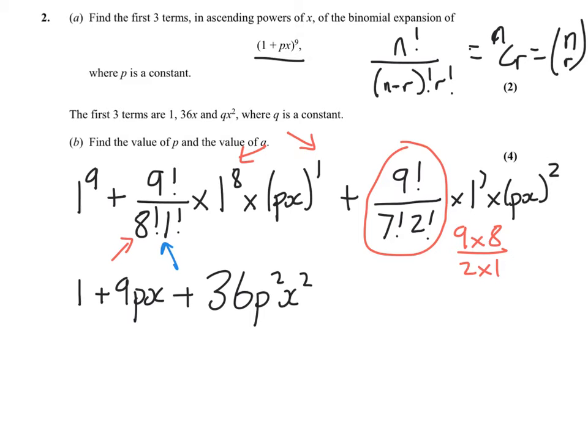And then the 1 to the power 7 is 1, p squared x squared. So there we go, that's part a done. Now part b, it says the first 3 terms are 1, 36x, and qx squared. Find the values of p and q. Well, for part b we know that 9p has to equal 36, so therefore p equals 4. And once we've got p equals 4, we should be able to find q from this part here.